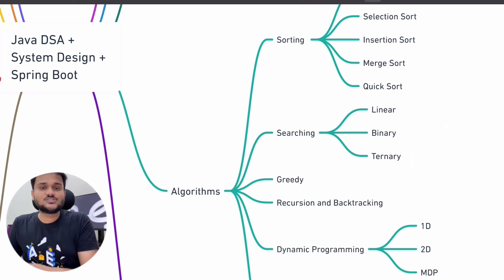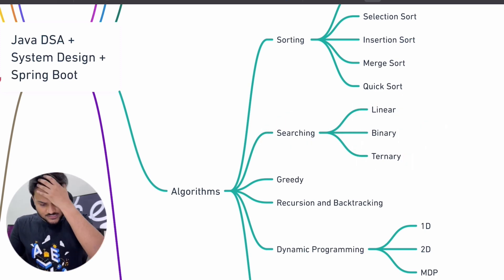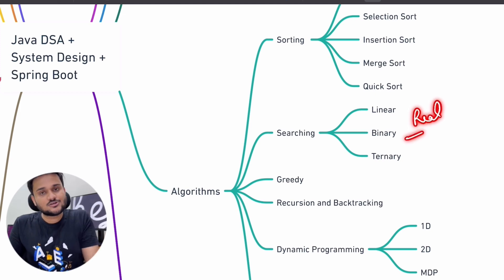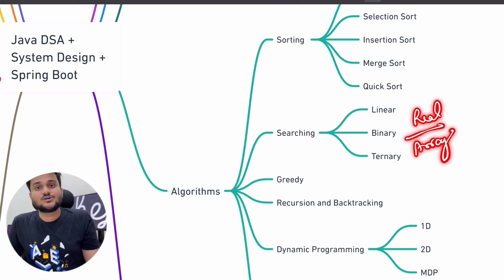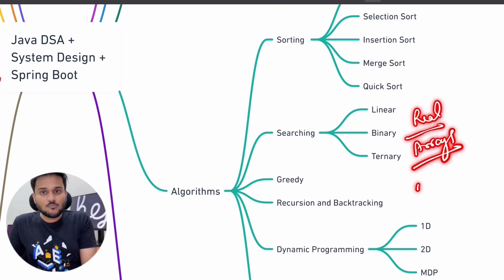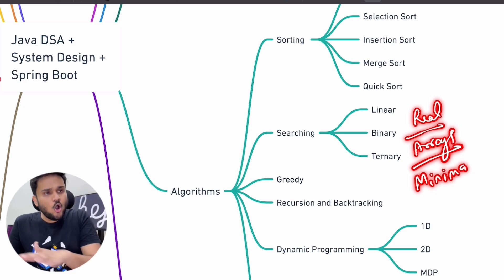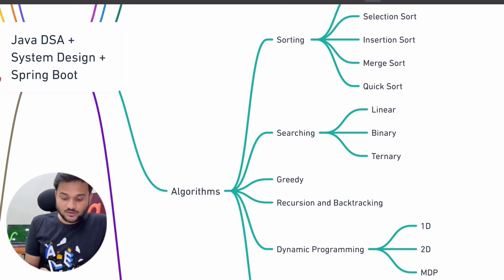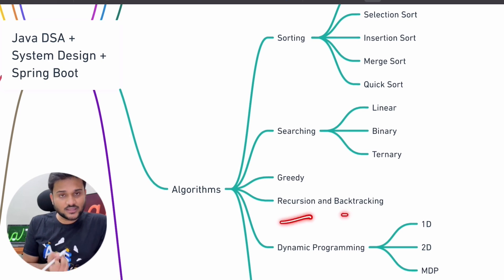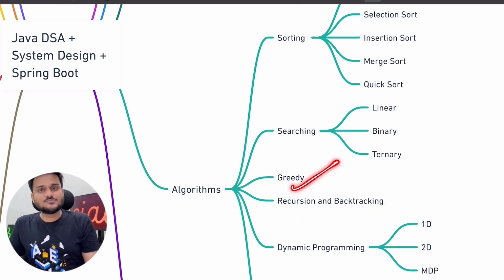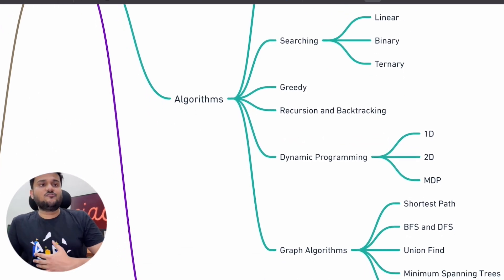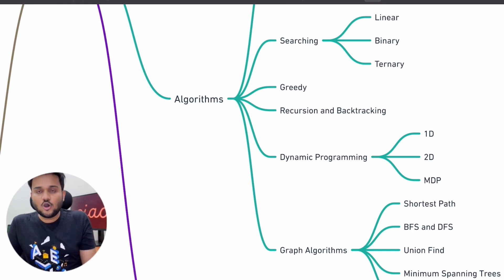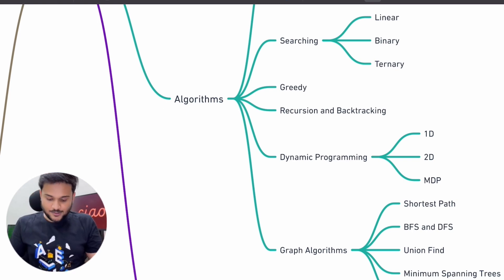Even in binary search, we are going to talk about a lot of techniques — for example, binary search on normal arrays, binary search on real numbers, binary search on minimax problems, and binary search on answer. We will talk about recursion and backtracking, and we will talk about greedy algorithms, because these three topics prepare the biggest fundamental part for your algorithmic journey ahead.